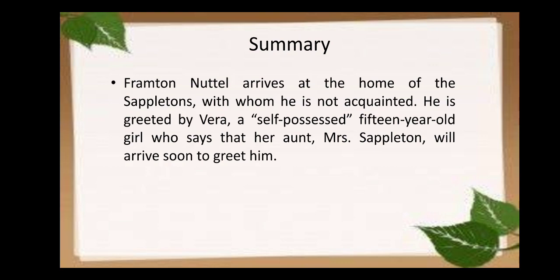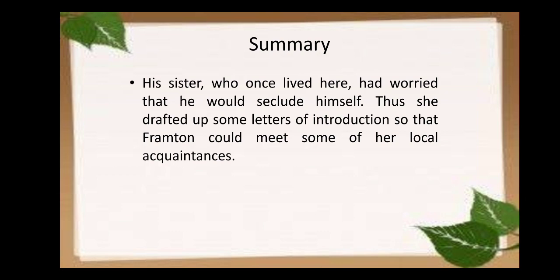At the beginning of the story, Frampton Nuttall arrives at the home of the Sappletons, with whom he is not acquainted — he does not know these people and has come to their place for the first time. He is greeted by Vera, a self-possessed 15-year-old girl, who tells him that her aunt Mrs. Sappleton will arrive soon. Frampton silently enters, reflecting on his recent move to this rural area where he has decided to settle down.